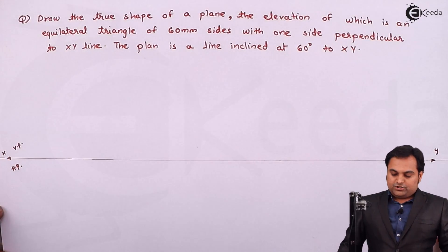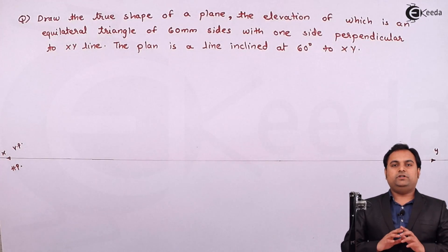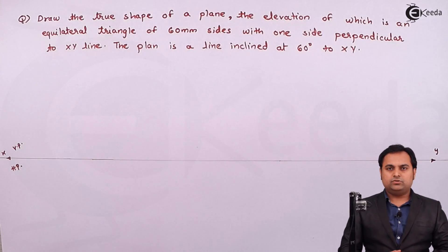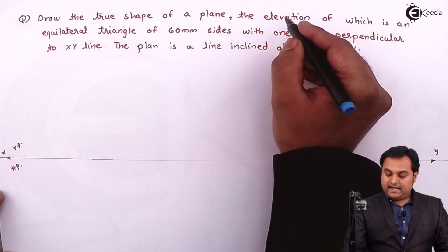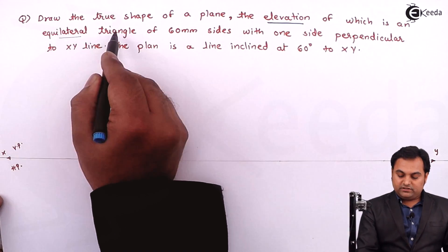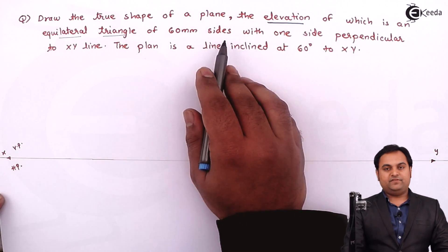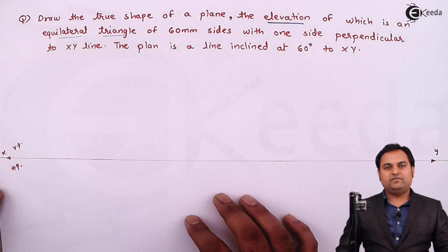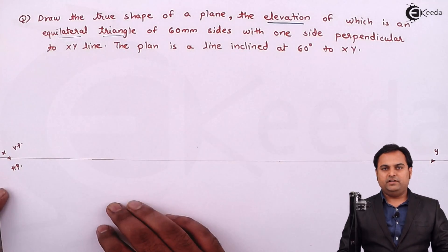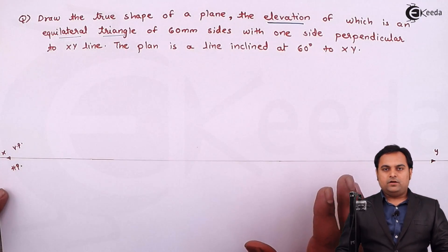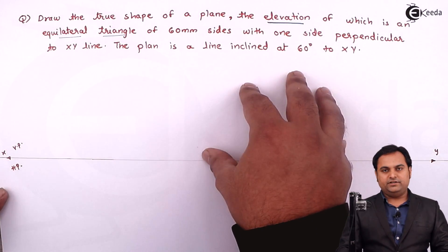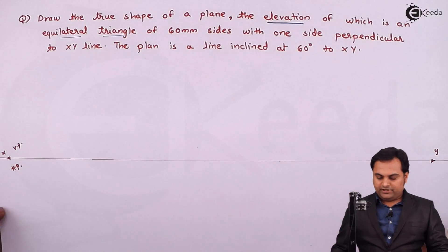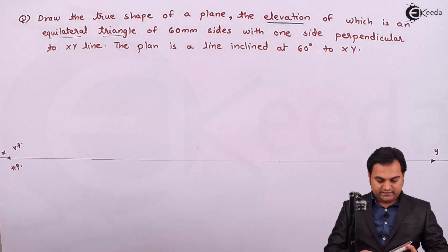The question asks us to draw the true shape of a plane. The elevation, meaning the front view, shows the object as an equilateral triangle of 60 mm sides, but this is not the true shape. We need to find the true shape. The elevation condition is the second condition, so we start with the second condition and then move back to draw the initial condition which gives us the true shape. I am drawing an equilateral triangle in the VP, that is in the elevation or front view.